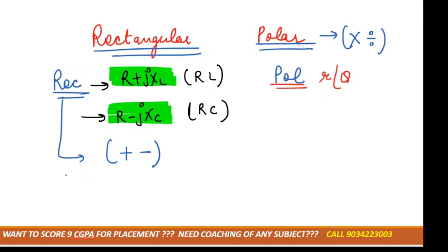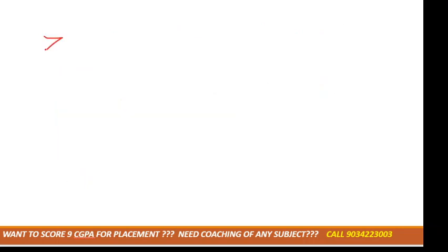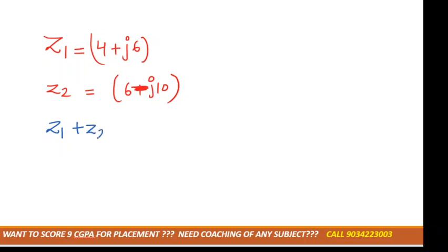Suppose we have given some values. I am taking an example. Suppose they have mentioned Z1 equals 4 plus j6 and Z2 equals 6 minus j10. We just simply want to add Z1 plus Z2. So how can it be added?